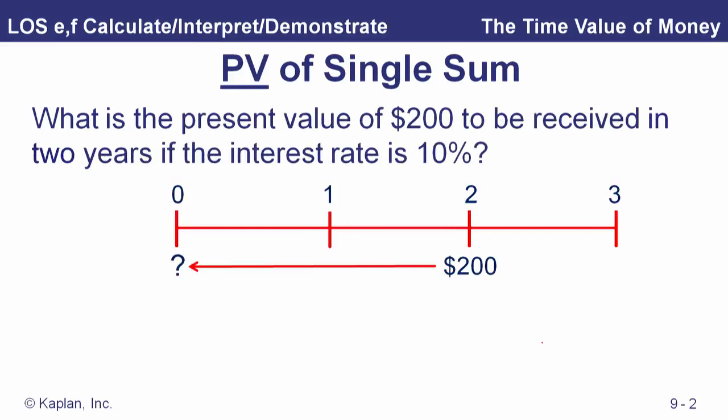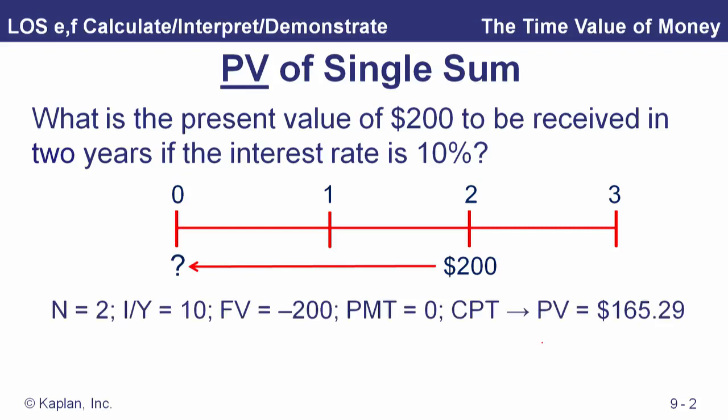Now let's go the other way in time and get the present value of a single sum to be received in the future. What's the present value of $200 to be received in two years if the interest rate is 10 percent? That's just our discounting. We can certainly do it with the calculator. Notice now that our future value we've put in is minus 200, so we'll get the present value is 165.29. Payment is zero — there's no interim payments, no flows into or out of this account.